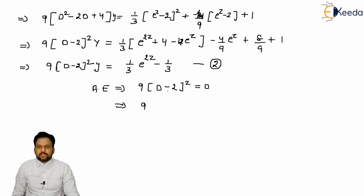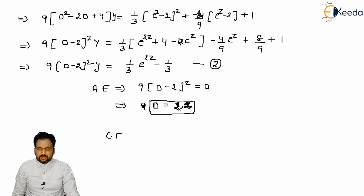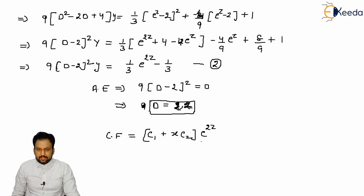Since D = 2 and D = 2 are repeated equal roots, the complementary function is CF = (c₁ + c₂·z)e^{2z}. Remember, for equal roots the complementary function takes this form. Now we need to find the particular integral PI.